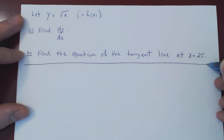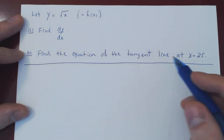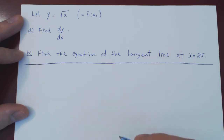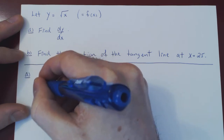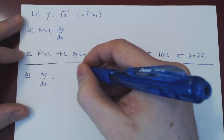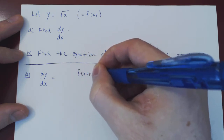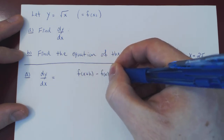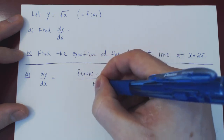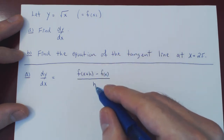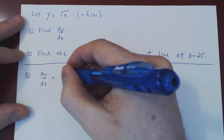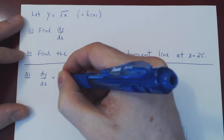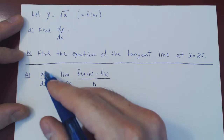Once we have the derivative of the function at any given value of x, finding the equation of the tangent line at any particular value of x is always very straightforward. We want the slope of our tangent line. We consider the slope of the secant line: f of x plus h minus f of x — total change in y — over h, which is the change in x. As we let h approach 0, the slope of the secant line will approach the slope of the tangent line.